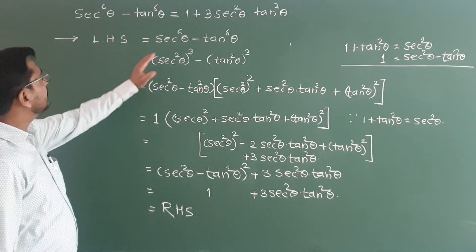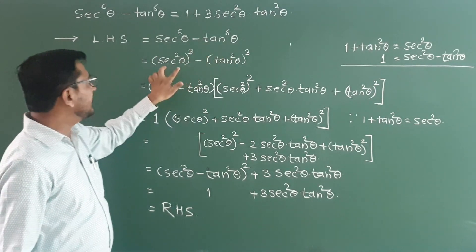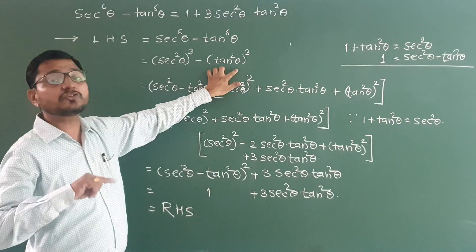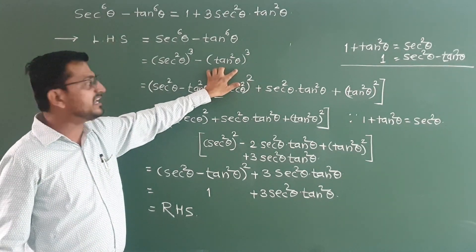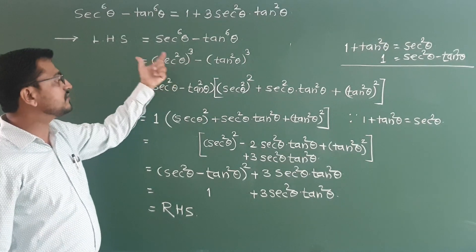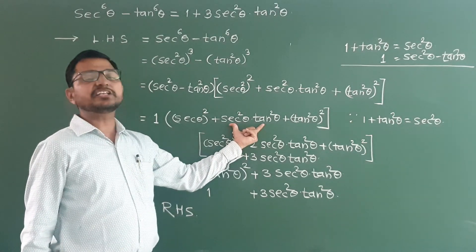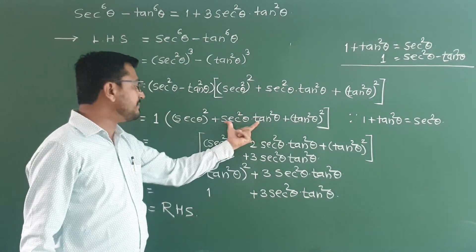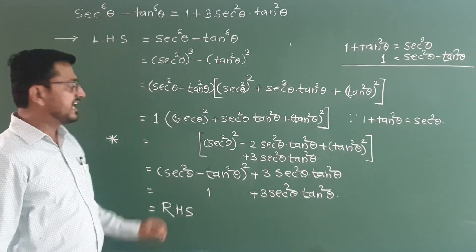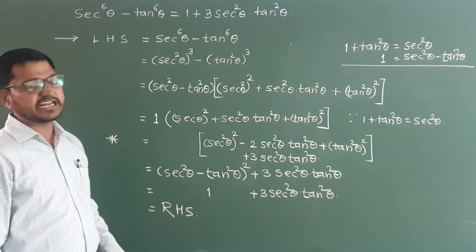Let's see what we did once more. sec raise to 6 theta minus tan raise to 6 theta — we converted it to sec square theta cubed minus tan square theta cubed, because of the square on two formula. Then we used the a cube minus b cube formula. After using a cube minus b cube, the second bracket was converted into a minus b bracket square form. After converting to a minus b bracket square, this term should be directly understood — you should have practice with it. If you know this term, there is no problem reaching the RHS. Hope you understand very well, thank you.